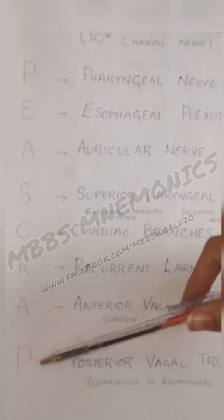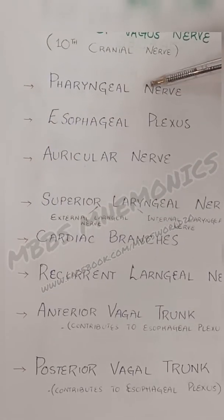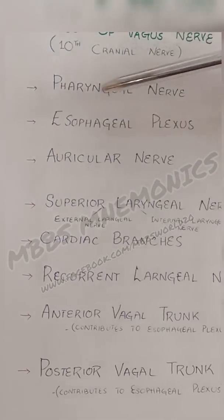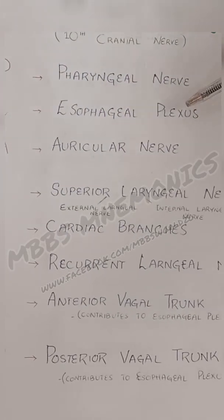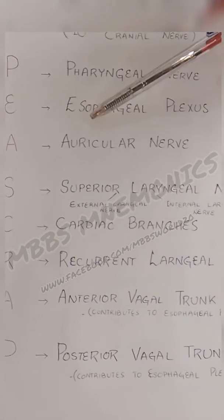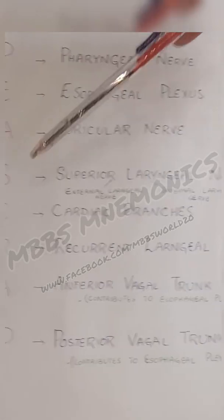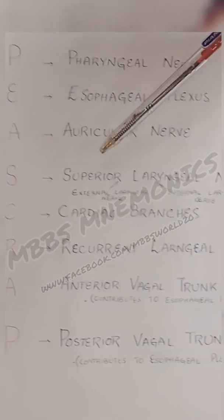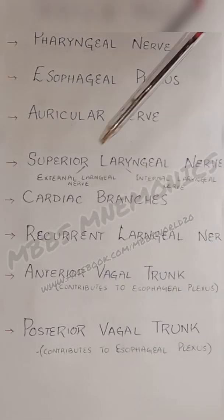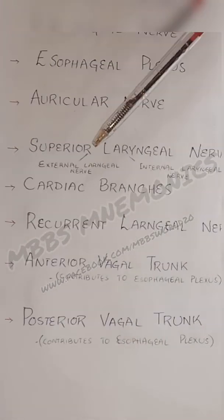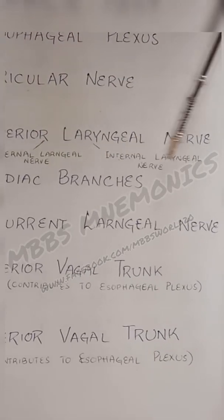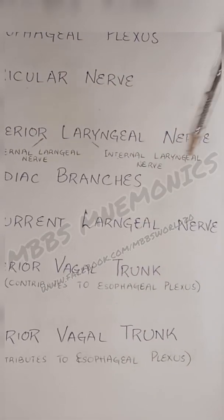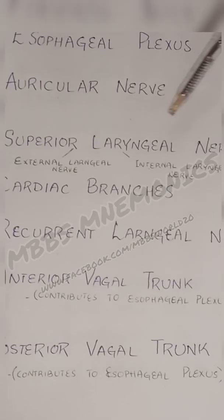P is for pharyngeal nerve, E for esophageal plexus, A for auricular nerve, S for superior laryngeal nerve — and it divides into two branches: the external laryngeal nerve and the internal laryngeal nerve. These are the branches of the superior laryngeal nerve.